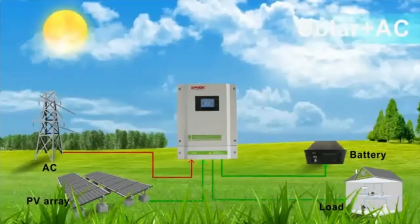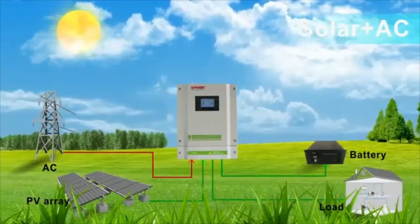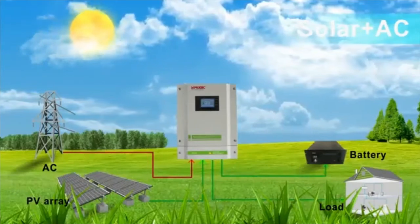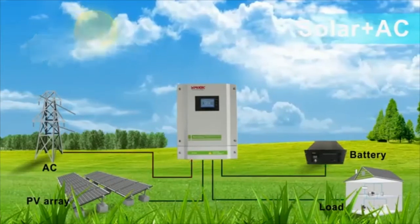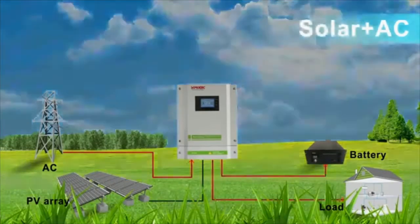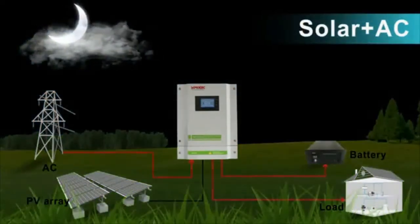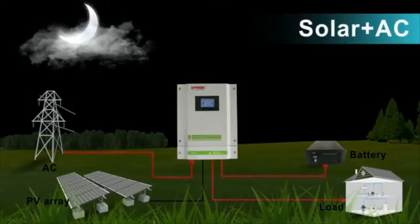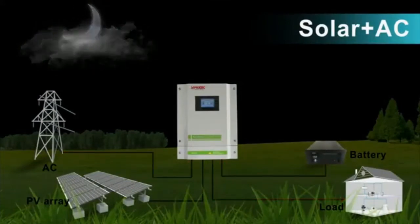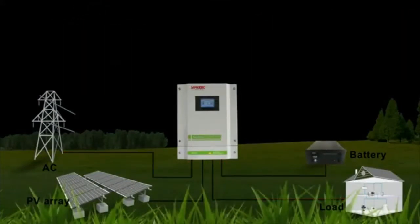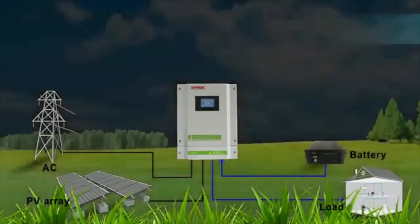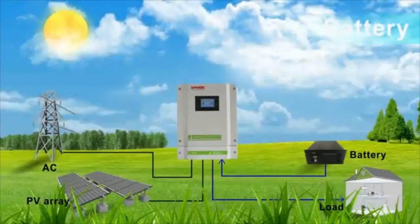Mode 2: Solar first. If solar is insufficient, utility will supply power at the same time. Load must be higher than 500 watts. If less than this, only utility energy provides power.